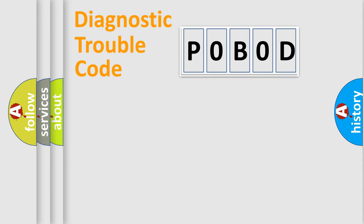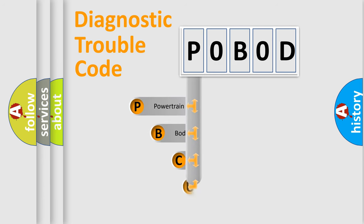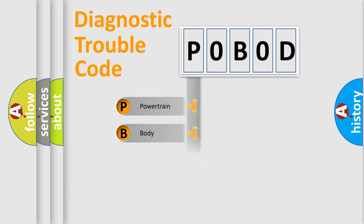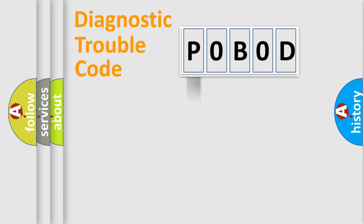Let's look at the history of diagnostic fault code composition according to the OBD2 protocol, which is unified for all automakers since 2000. We divide the electrical system of an automobile into four basic units: powertrain, body, chassis, and network.